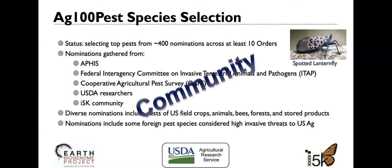We've had diverse nominations including pests of field crops, animals, bees, forests, and stored products, and nominations include some foreign pest species considered of high invasive threats to US agriculture. This is a very collaborative and community process. If you have an agricultural pest insect that you have interest sequencing the genome and maybe don't have the capacity or the resources to do so, please reach out to our group and we'll try to see how we can help you reach your goals.